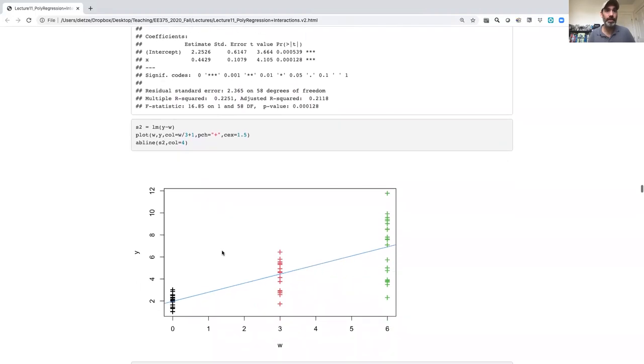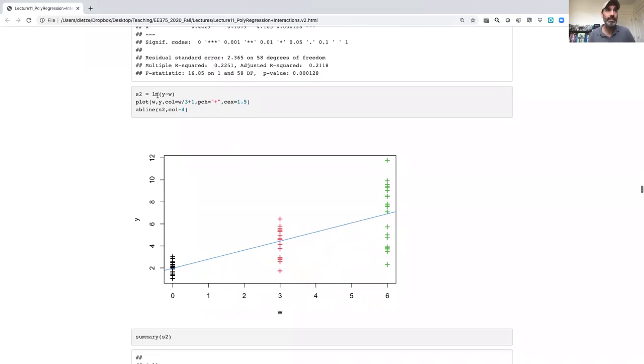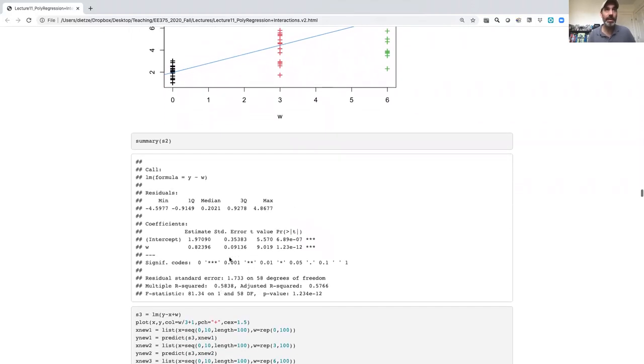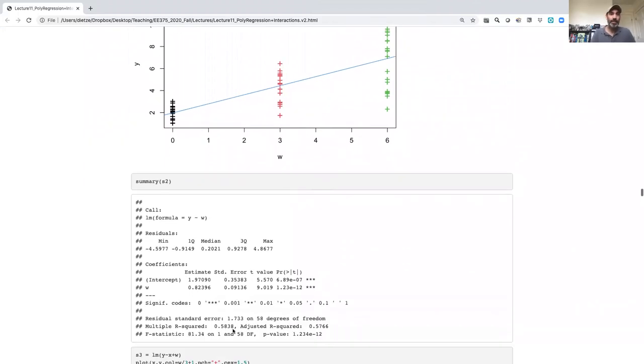I can do a similar thing for w. I can fit a linear model there, lm y tilde w. And again, that comes out significant. Actually, even though it's not nearly visually as dramatic as the other one, we actually have a higher r squared just from w alone.